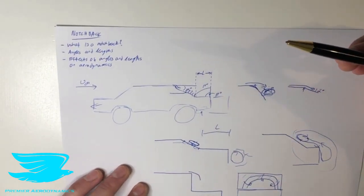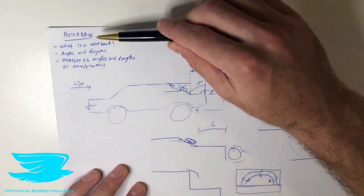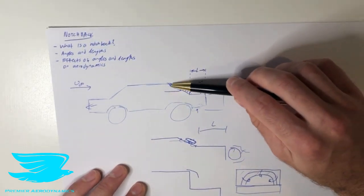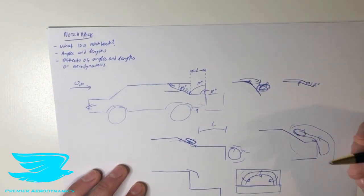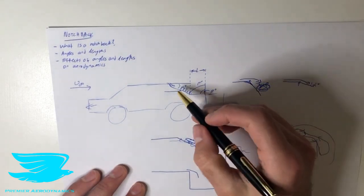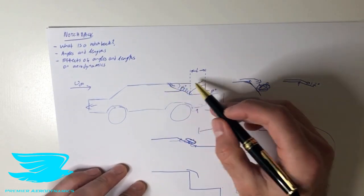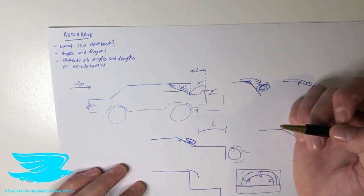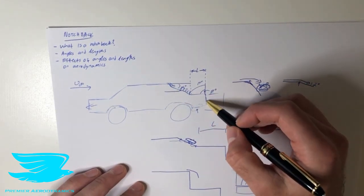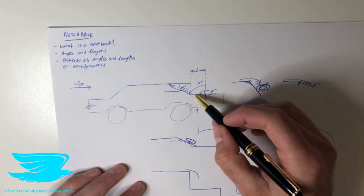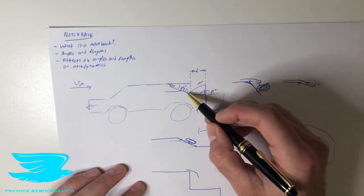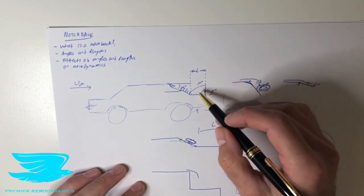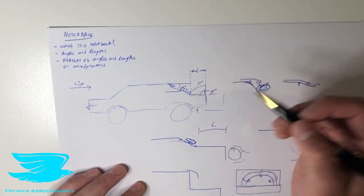Let's go through again what we covered in this video. We covered what a notchback is. And a notchback is where we have not only the backlight or the back window, we also have a boot region. And the angles and lengths of a notchback are, first of all, the angle between the roof or the horizontal as well and the backlight. We also have the angle between the back of the car and the boot or the trunk. We also have the angle between the back of the car and the backlight. That's gamma. And we have the length of the boot or the trunk.